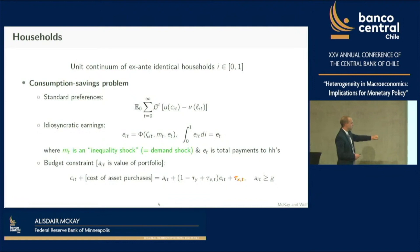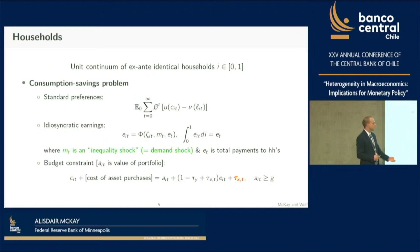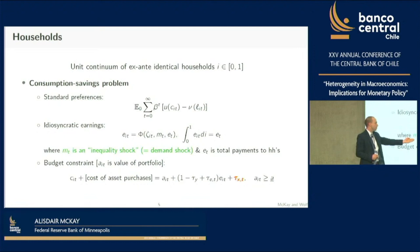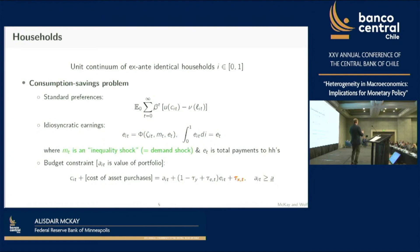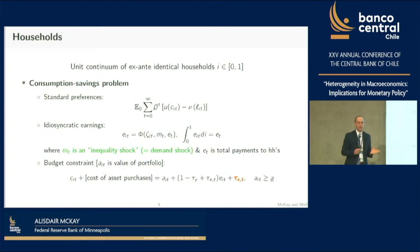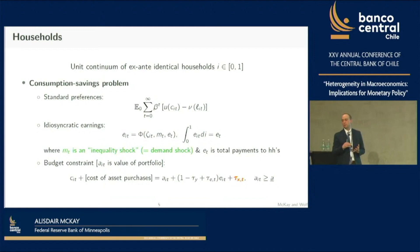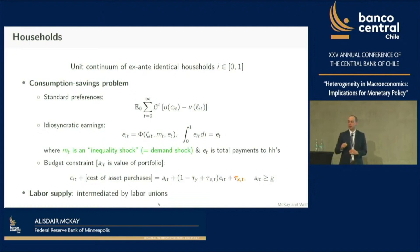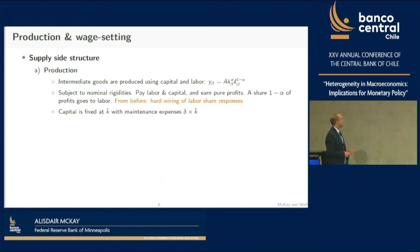The budget constraint: households consume and purchase assets. They have the value of assets from last period including returns, plus earnings net of taxes, plus a lump-sum transfer tau_x—think of that as a fiscal stimulus payment, like every household gets $500. Tau_y is a constant labor income tax; tau_e adjusts to maintain long-run budget balance. Like papers this morning, we use a union to intermediate labor supply, so all households work the same hours and a union is involved in wage setting.